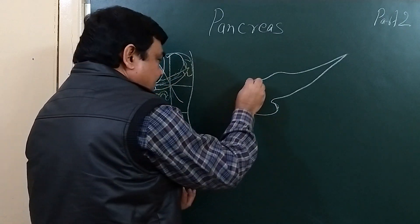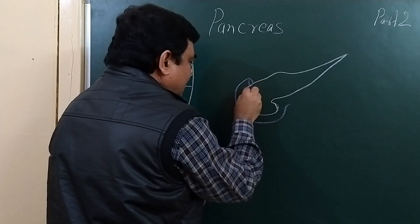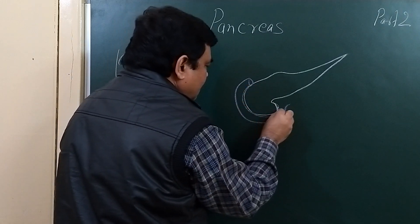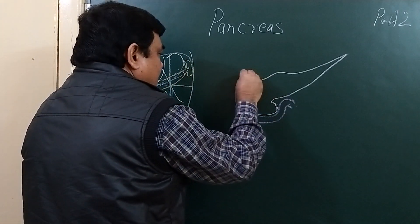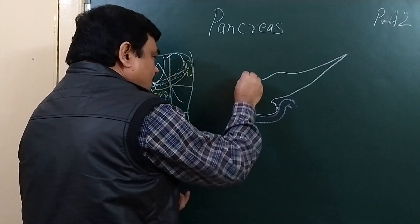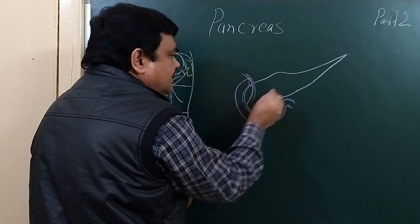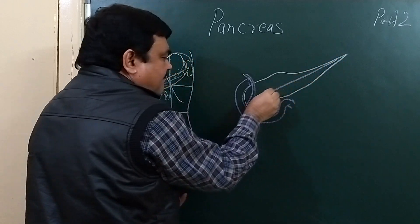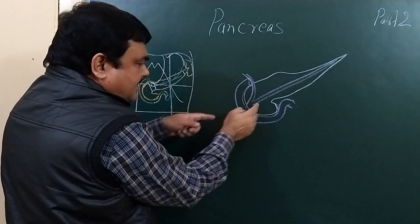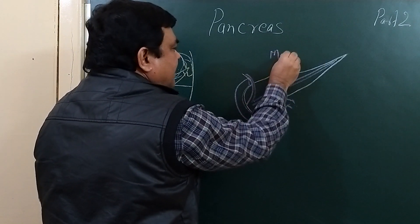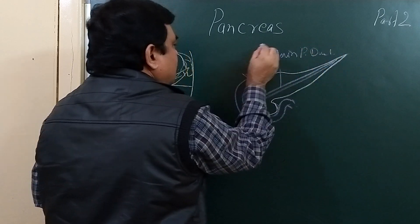Here is the position of the duodenum. This is the duodenum. This is the common bile duct and this is the main pancreatic duct — the main pancreatic duct of Wirsung.